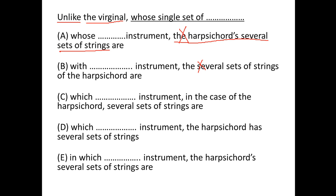Option C says 'in the case of harpsichord,' but it should say 'in the case of virginal' to be parallel — so that's not parallel either. Option D says 'the harpsichord,' which is an instrument, so instrument can be parallel to instrument. Keep option D. Option E says 'the harpsichord several sets of strings' — again, instrument compared to strings, not parallel.